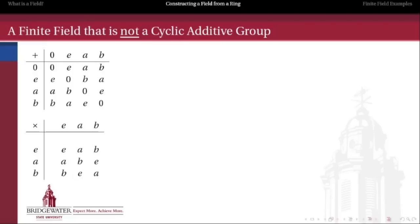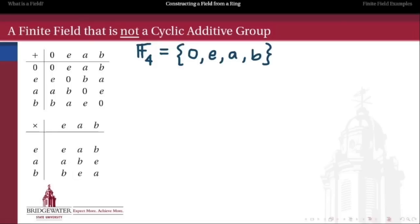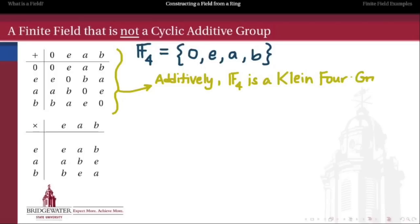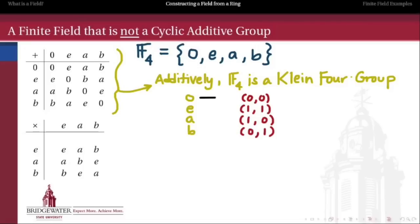Here's an example of a finite field that is not one of our familiar Z mod PZs. We're going to build this by starting with four elements. Let's call them zero, E, A, and B, where zero is the additive identity and E is the multiplicative identity. We're going to say that additively each of these elements has order two, so if I add any element to itself, we end up with the additive identity. So what is this additively but the Klein 4 group?